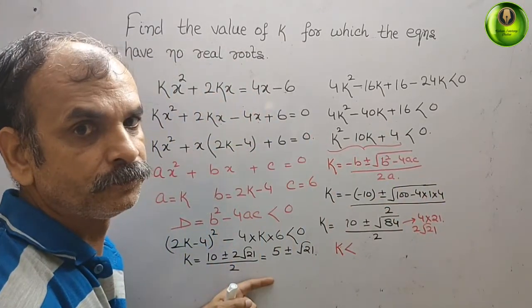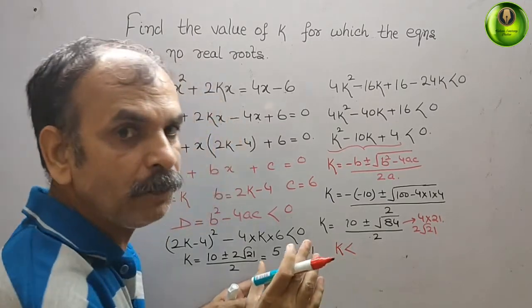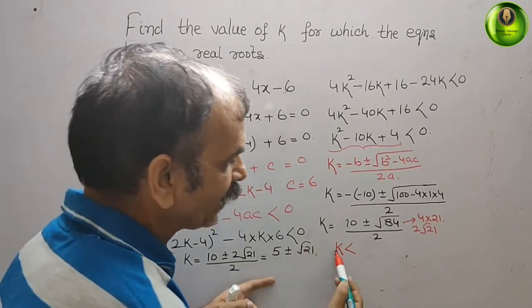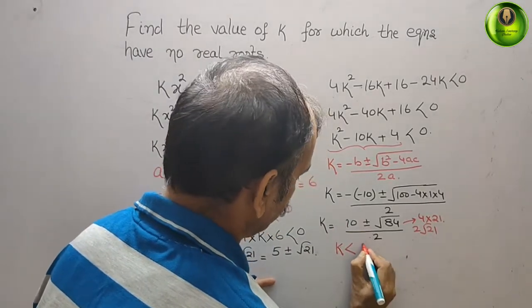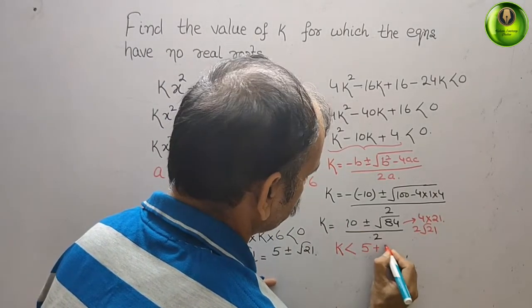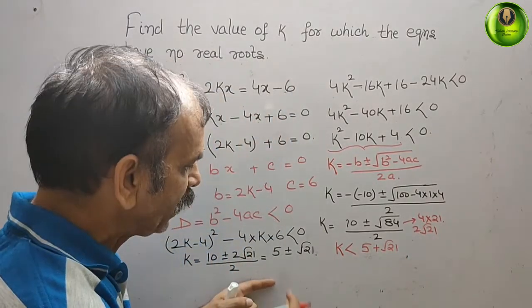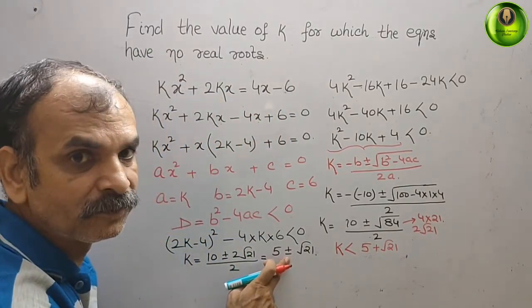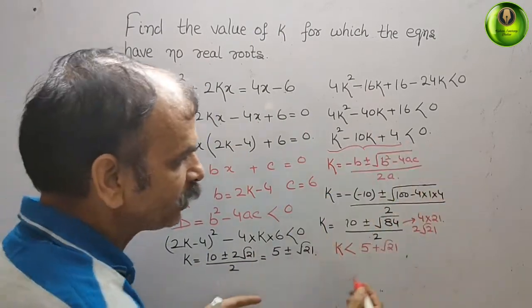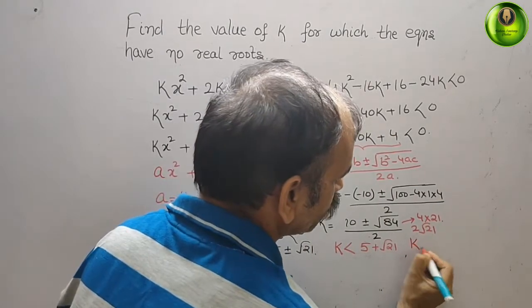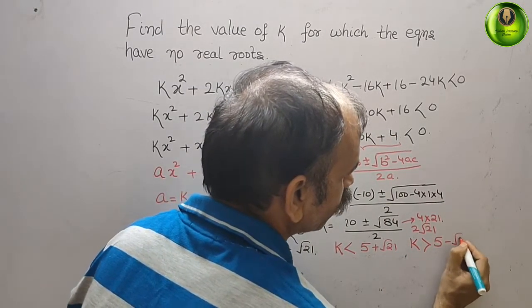Therefore the positive value will always be less than that value. That means k < 5 + √21. But when it changes to minus, that means we have changed the value to the other side. That means k > 5 - √21.